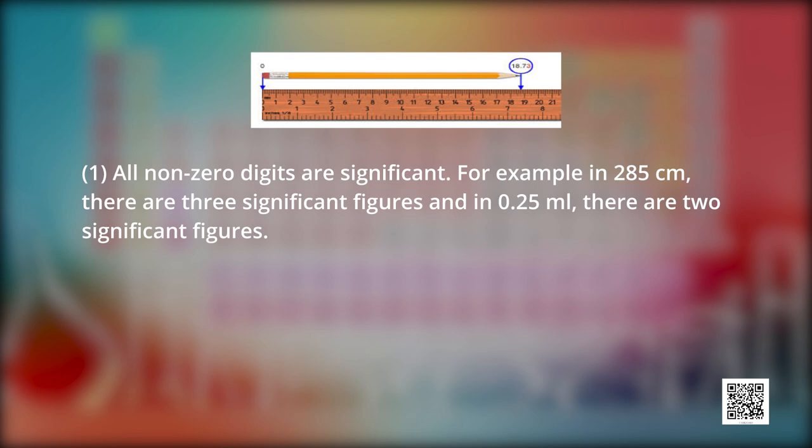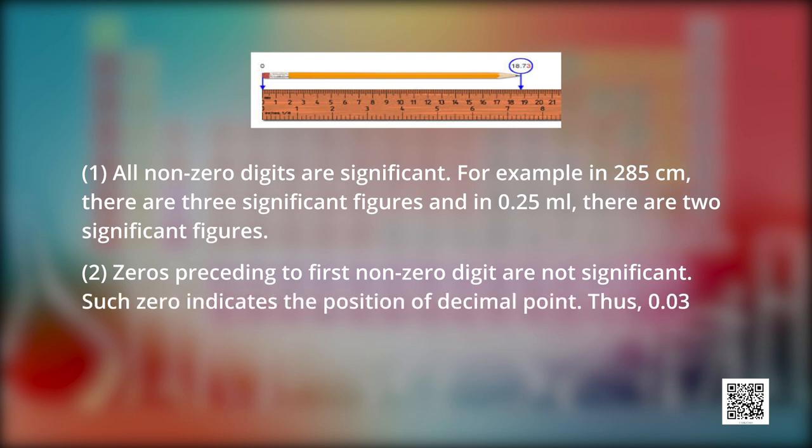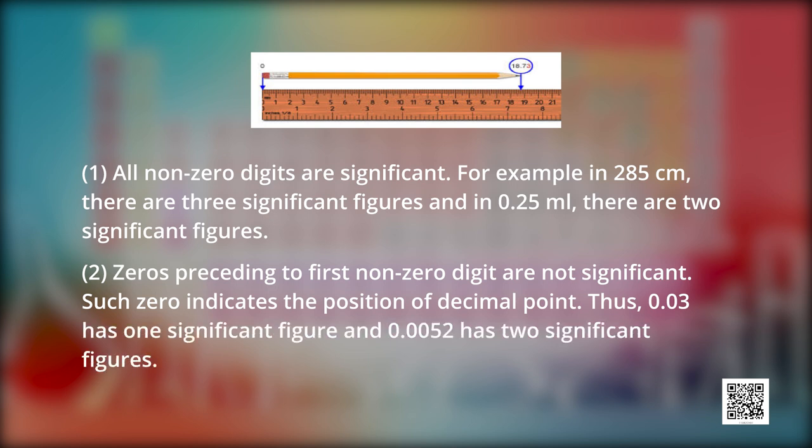As you can see on the screen, first rule says that all non-zero digits are significant. For example, in 285 cm, there are three significant figures. And in 0.25 milliliter, there are two significant figures. According to the second rule, zero preceding to first non-zero digits are not significant. Such zero indicates the position of decimal point. Thus, 0.03 has one significant figure and 0.0052 has two significant figures.